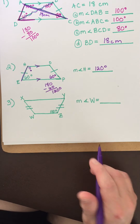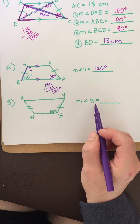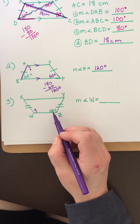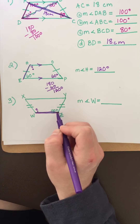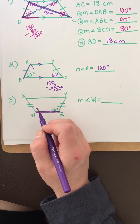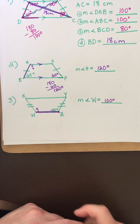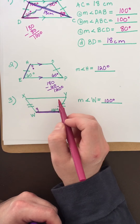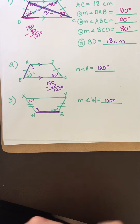For number three, the measure of angle Z is 100 degrees and we want to find angle W. These two angles share the same base, so if angle Z is 100 degrees and this is an isosceles trapezoid, angle W must also be 100 degrees. Bonus question: what do the other two angles have to be? They've got to be 80 degrees.